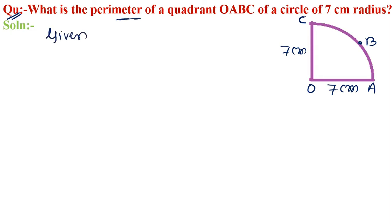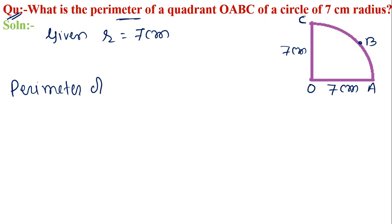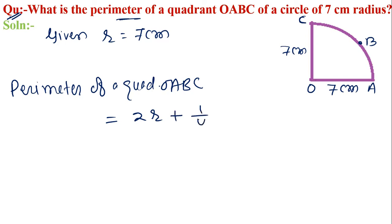Given: radius is equal to 7 centimeters. The perimeter of a quadrant OABC is equal to 2r plus 1 by 4 into 2πr. So here 2r: radius is given as 7.